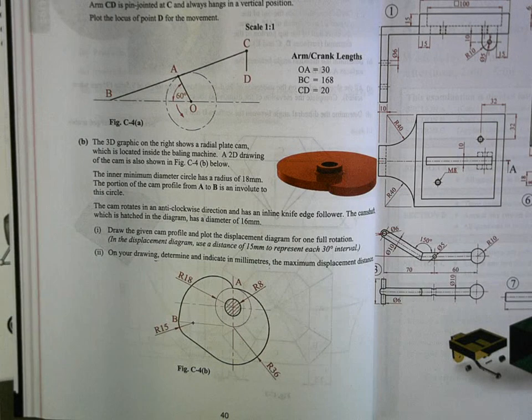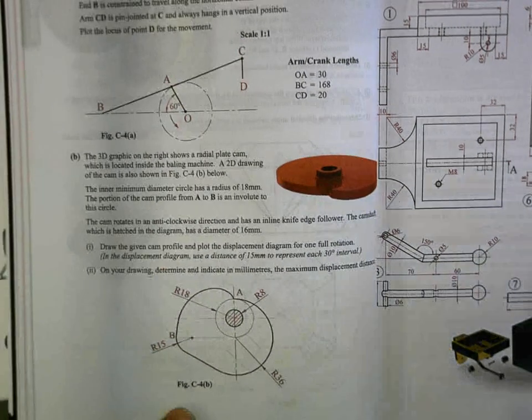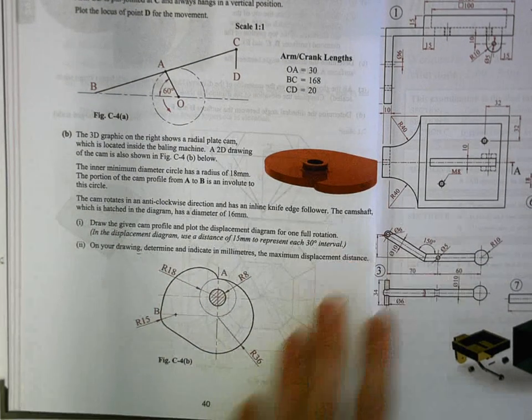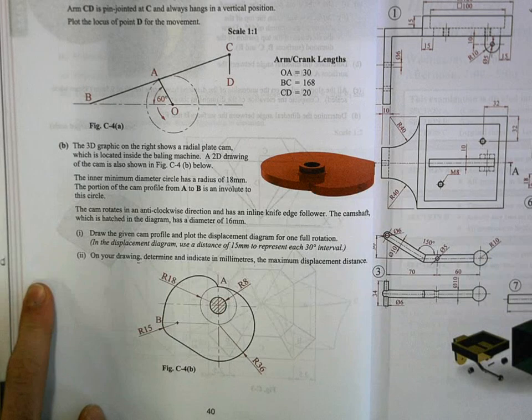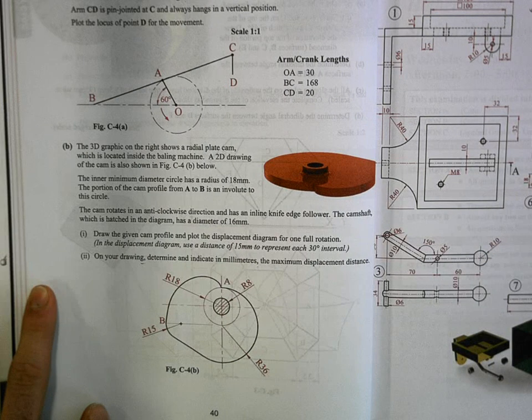Now, involute is quite straightforward to do, slightly different. Don't mix it up with the Archimedean spiral. They are two different things and two different drawings, so the examiner will be looking out that you know the difference.